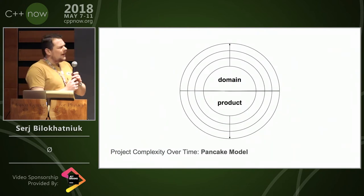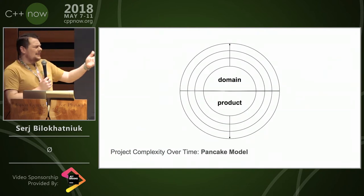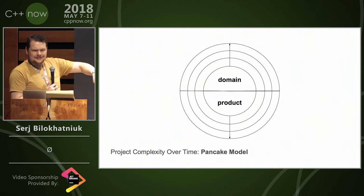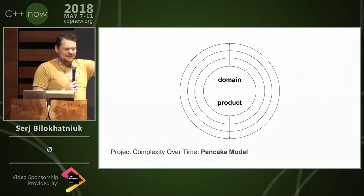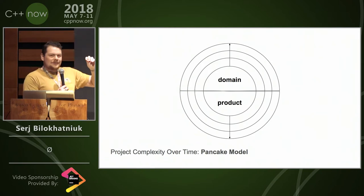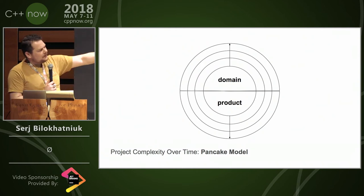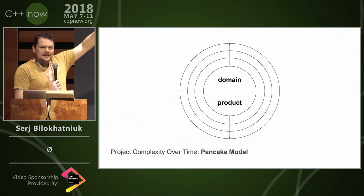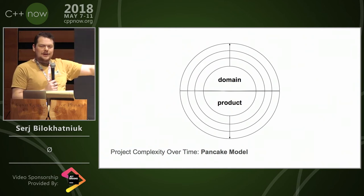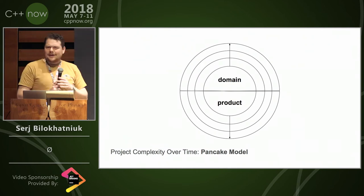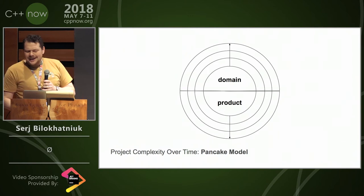So how does it grow? I think it's something like a pancake model — you pour it in a pan and it goes in circles. You tap into the domain and you build a bigger interface with it, and your product complexity grows proportionally to the domain. I think that's healthy, and that's how we always thought it should be.